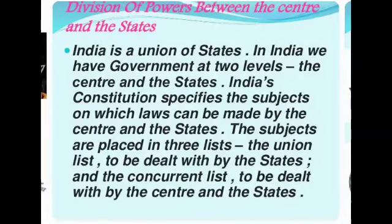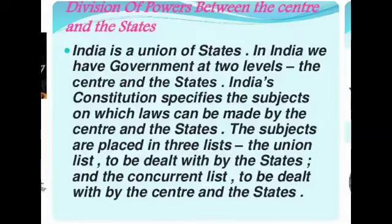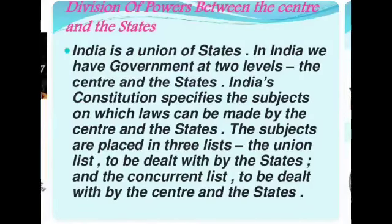Division of powers between the centre and the states: India is a union of states. In India we have two levels of government — the centre and the states. India's constitution specifies the subjects on which laws can be made by the centre as well as by the states. The subjects are placed in three lists: the union list, the state list to be dealt with by the states, and the concurrent list to be dealt with by both the centre and the states. Both governments are responsible when dealing with the concurrent list, meaning both the centre and the state have the right to legislate.